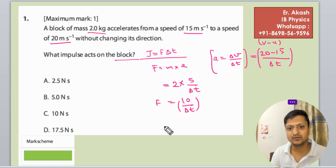So the impulse is force into delta t, so force is 10 into delta t into delta t.